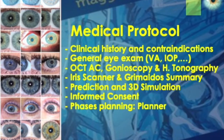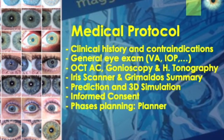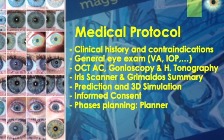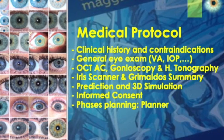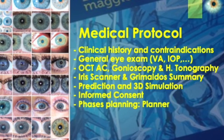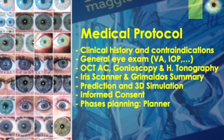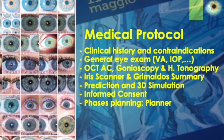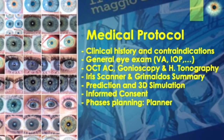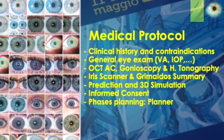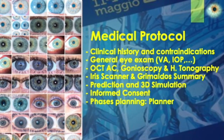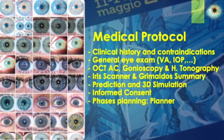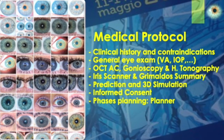The medical protocol begins with the clinical history to detect major contraindications. Then we perform a general eye check and specific examinations: OCT, gonioscopy, and non-contact tonography. The iris scanner is essential to obtain the iris summary. We then show the candidate patient the most likely prediction and a 3D simulation. Once all tests and information are completed, legal consent is signed.